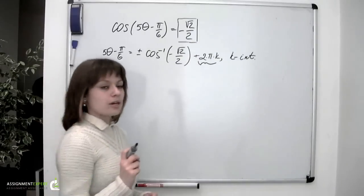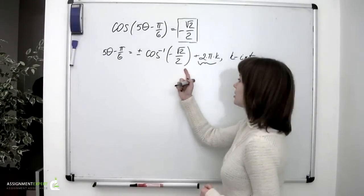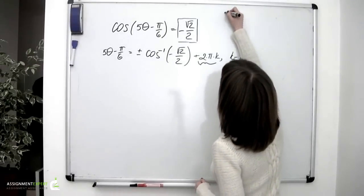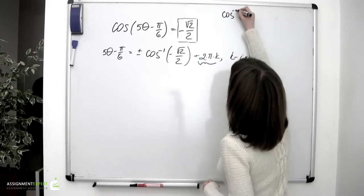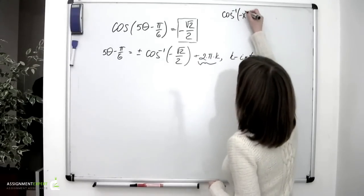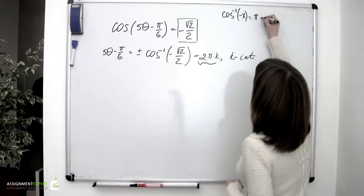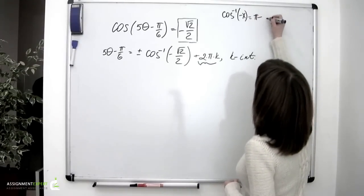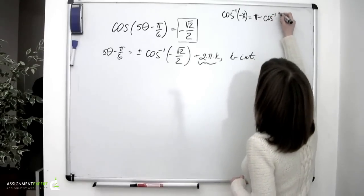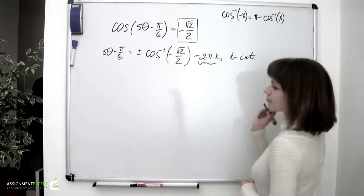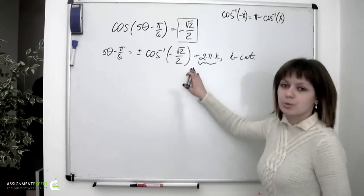We also know that the inverse cosine function of a negative argument is transformed as follows: the inverse cosine of negative x equals pi minus the inverse cosine of x. So let's apply this formula to our equation.